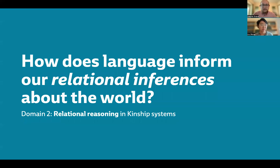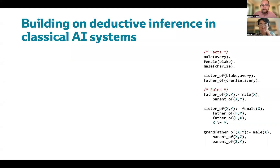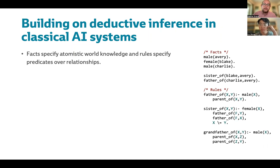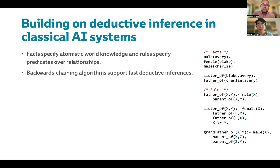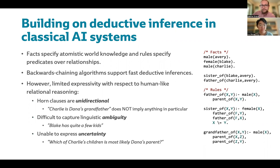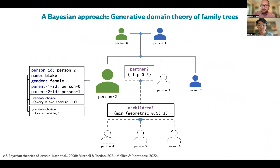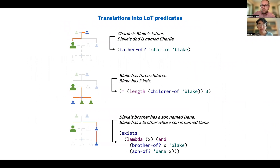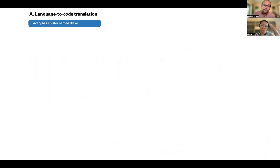Next, we show how our framework extends to kinds of reasoning associated with earlier symbolic approaches to AI, using the classic example of kinship systems to illustrate relational reasoning. In Prolog-style deductive inference, we write out axiomatic facts and predicates, then run a backwards chaining search to check whether an inference is supported. This style of deductive inference differs from human-like reasoning in several key ways: the rules are unidirectional, they don't support linguistic ambiguity, and it's difficult to quantify uncertainty. Instead, we take a Bayesian approach, starting with a generative domain theory of family trees — a recursive tree-structured model — and annotating few-shot examples of desired translation behaviors.